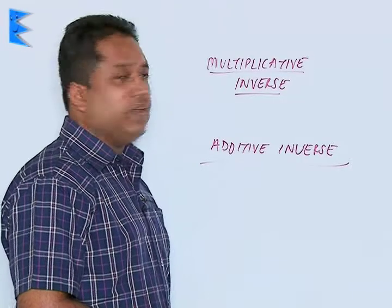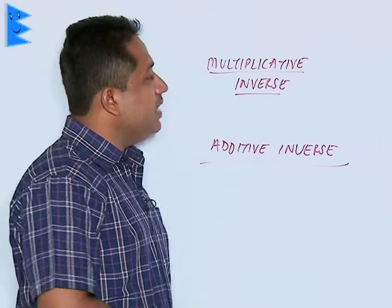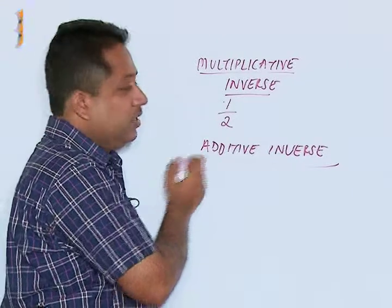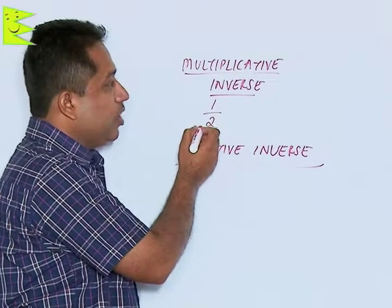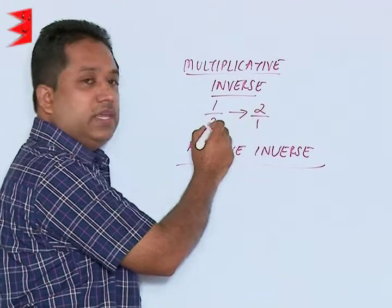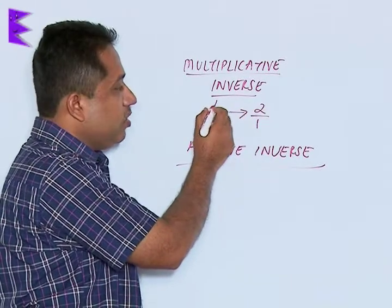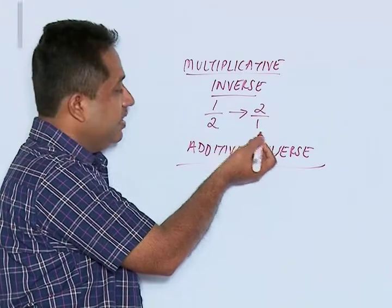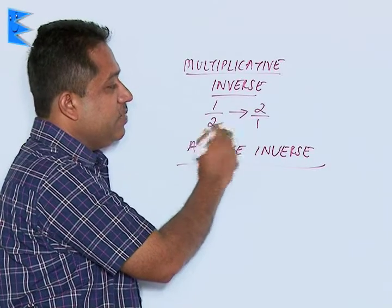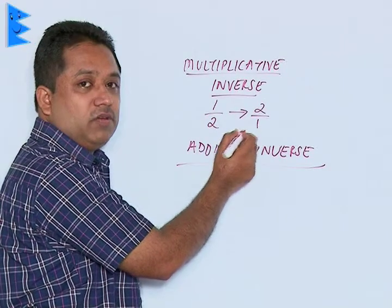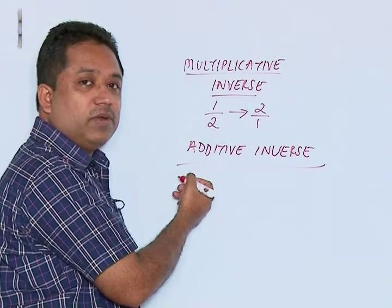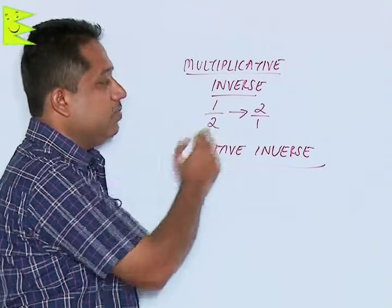Multiplicative inverse and additive inverse. The meaning of multiplicative inverse is to take the reciprocal of a given number. If you are given 1 by 2, the multiplicative inverse of 1 by 2 will become 2 by 1. The numerator of the question becomes the denominator in the answer and the denominator becomes the numerator. So for any number, say 3 by 4, the multiplicative inverse is 4 by 3.